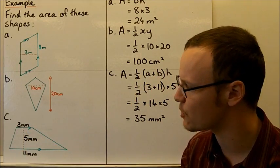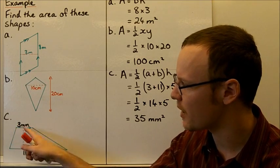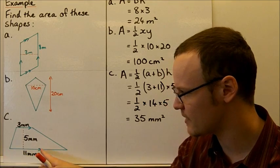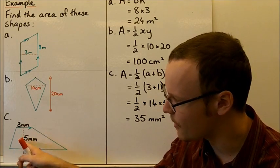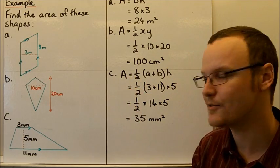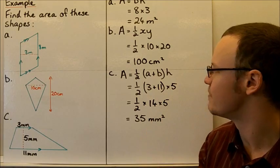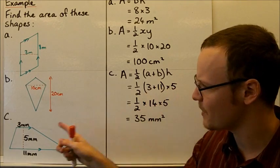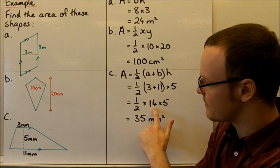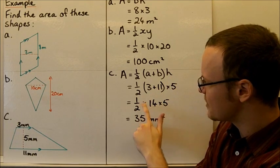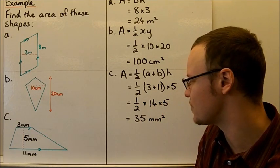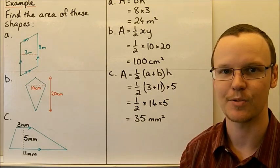Our last example is a trapezium with one parallel side being 3 millimetres and the other parallel side being 11 millimetres. The perpendicular height is 5 millimetres. So the area is a half times (A plus B) multiplied by H. A plus B is 3 plus 11, which equals 14. The height is 5, so it's a half times 14 times 5, which gives 35 square millimetres.